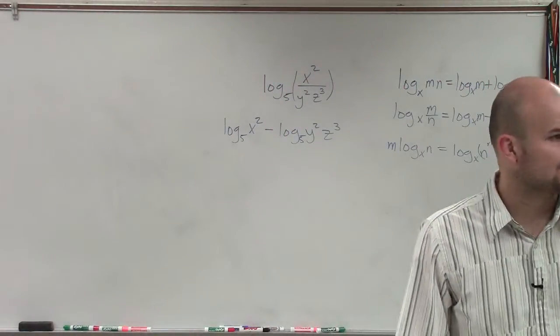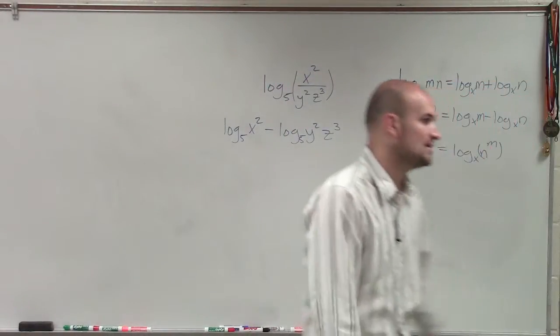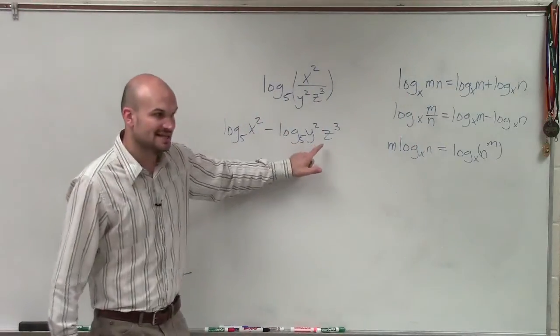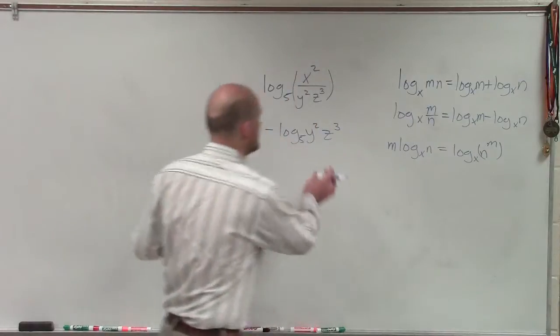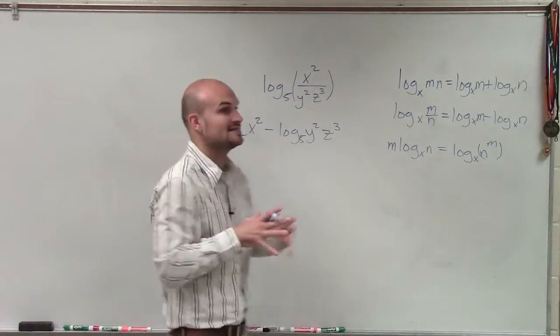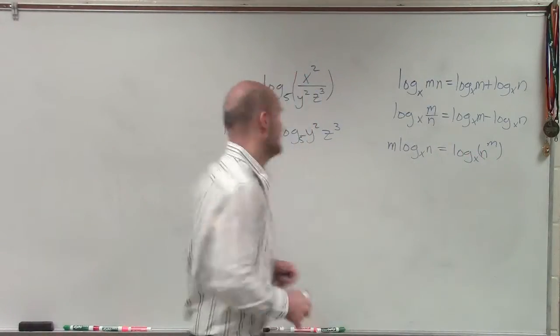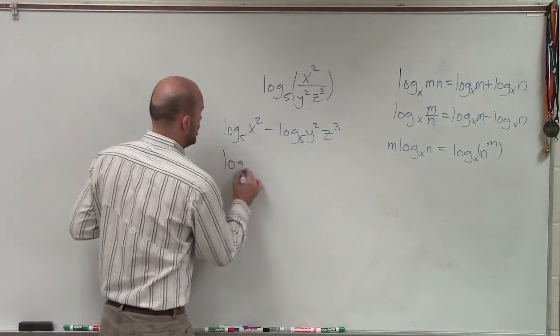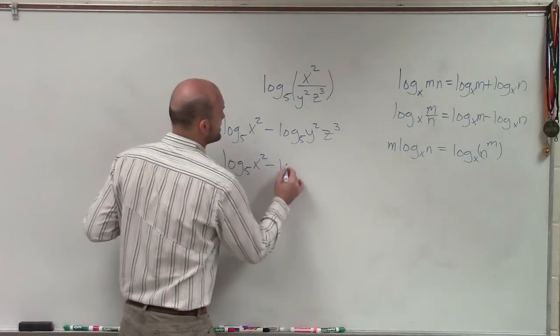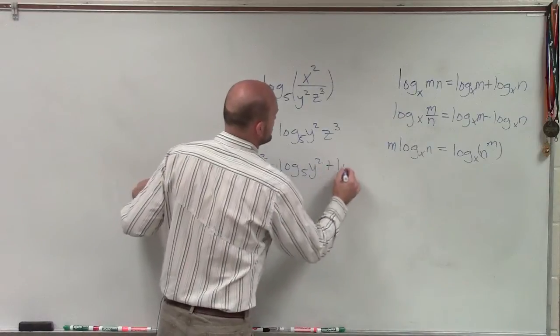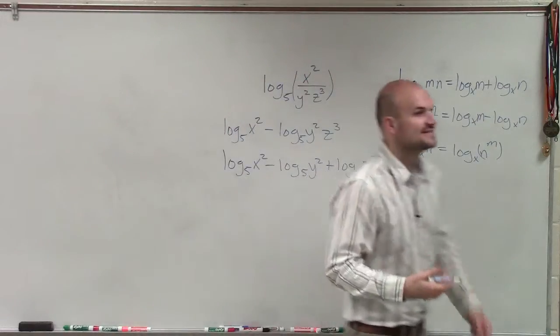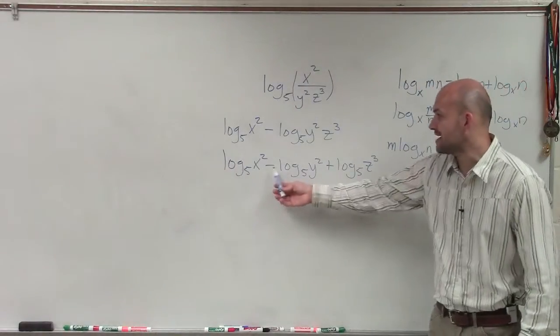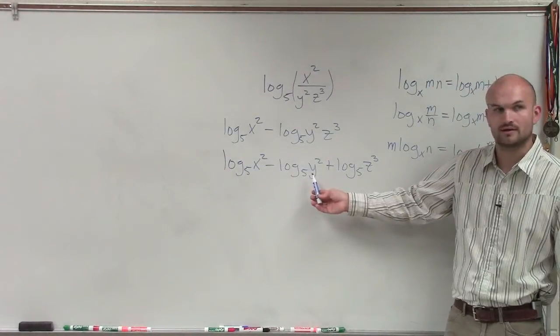Now, here's where a lot of students made their small little mistake. Notice how this is this minus this. Now, there's a couple different ways you guys could do this. But we know that now this is a product. So I can separate that into addition. So I could say log base 5 of x squared minus log base 5 of y squared plus log base 5 of z cubed. But notice if now I'm only subtracting the log base 5 of y squared.